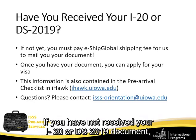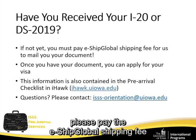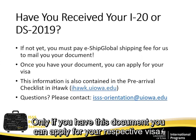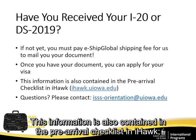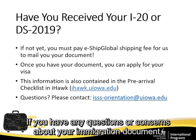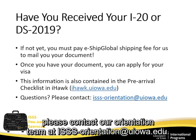If you have not received your I-20 or DS-2019 document, please pay the eShip Global shipping fee so that the ISSS department can mail this document to you. Only if you have this document can you apply for your respective visa. This information is also contained in the pre-arrival checklist in IHOG — the website address is provided on the slide. If you have questions about your immigration document, please contact our orientation team at isss-orientation@uiowa.edu.